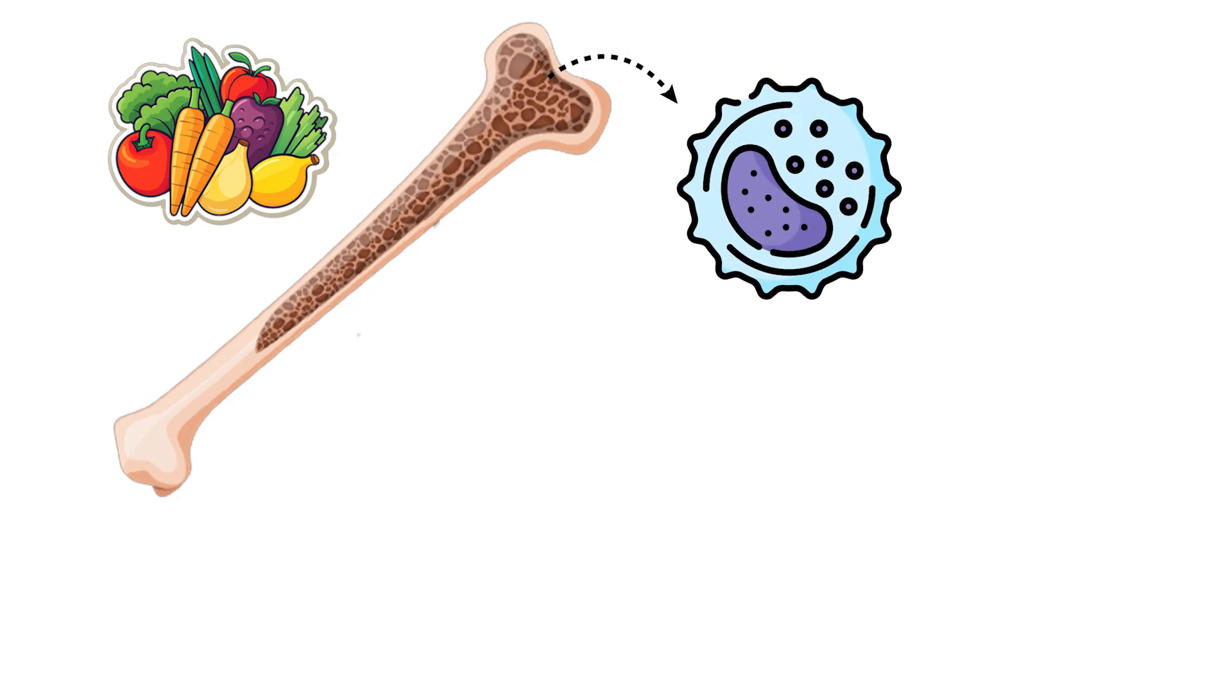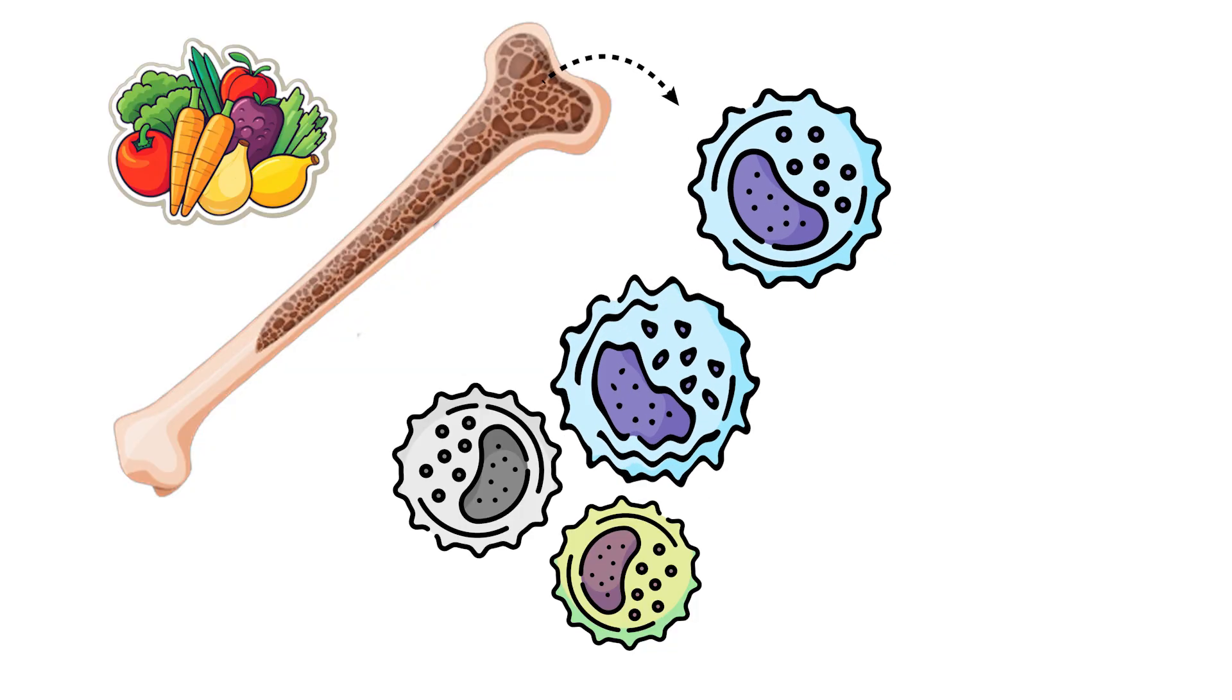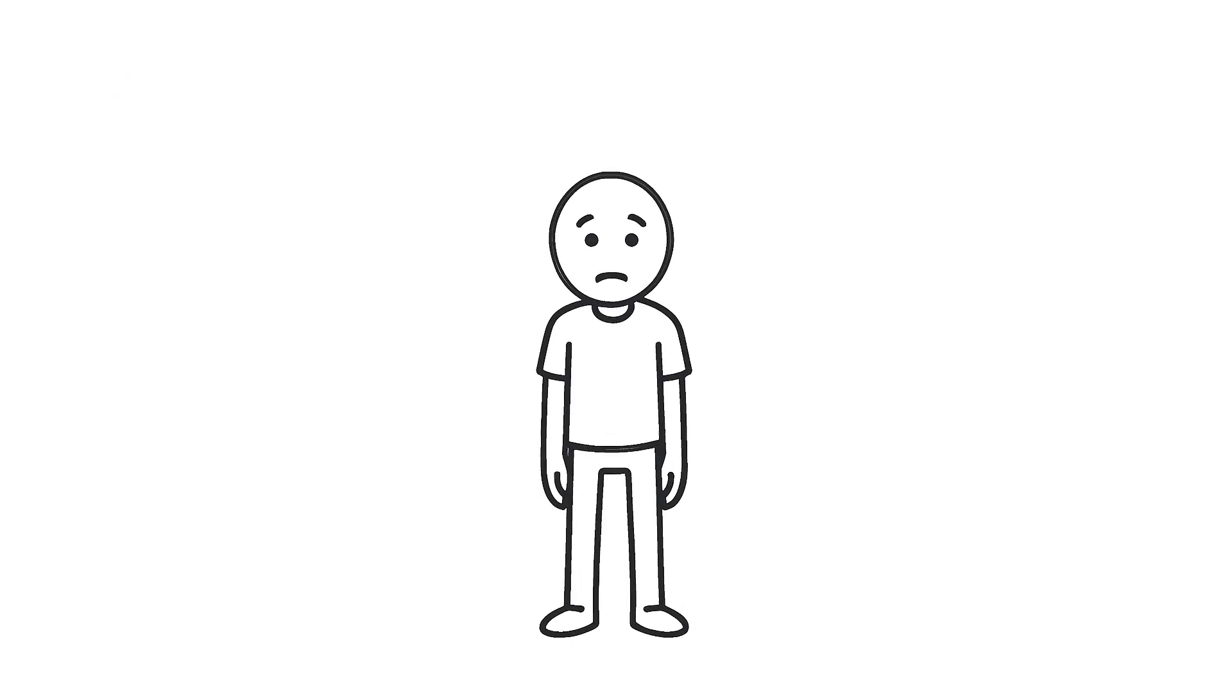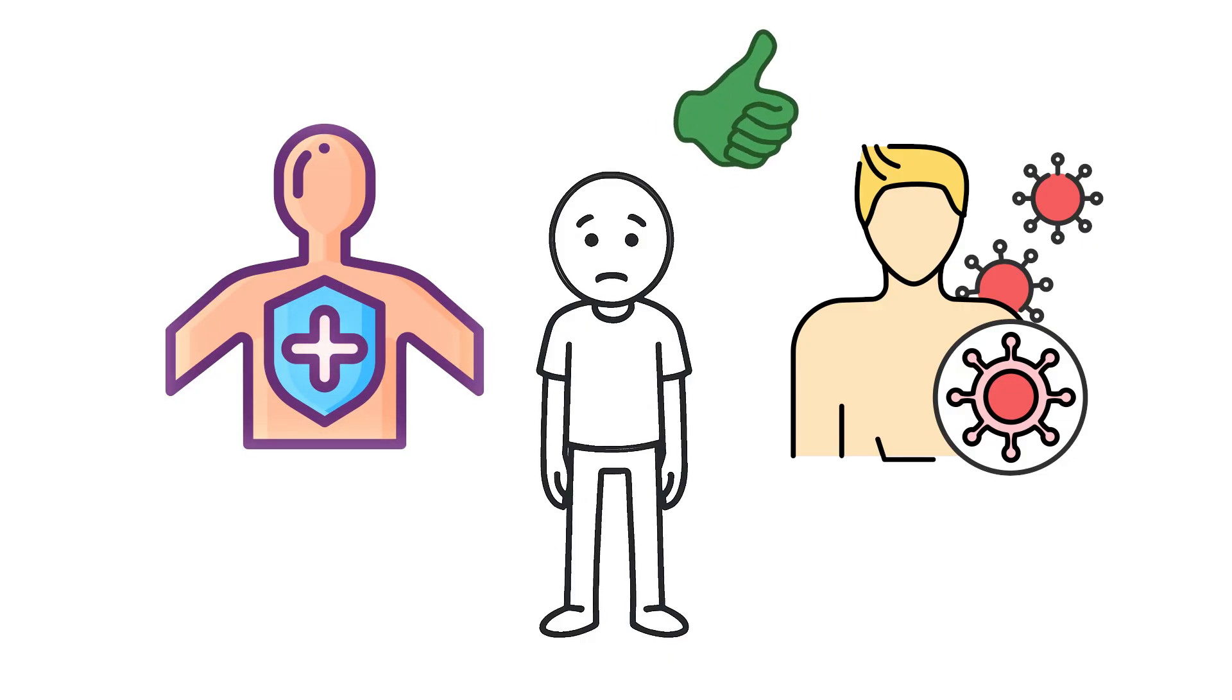When food comes back, stem cells in the bone marrow start producing fresh white blood cells to replace the old, damaged, or worn-out ones that got cleared during the fast. For people with overactive immune responses or autoimmune tendencies, this reset can bring real relief.